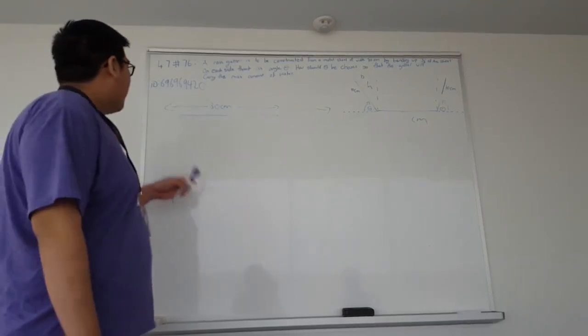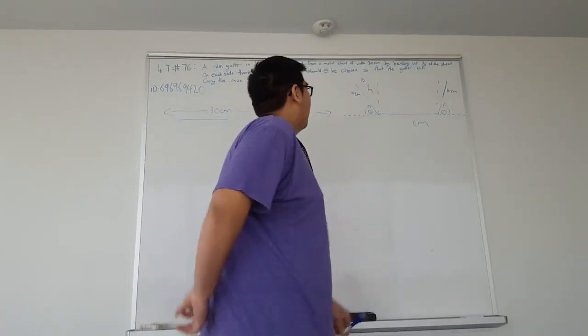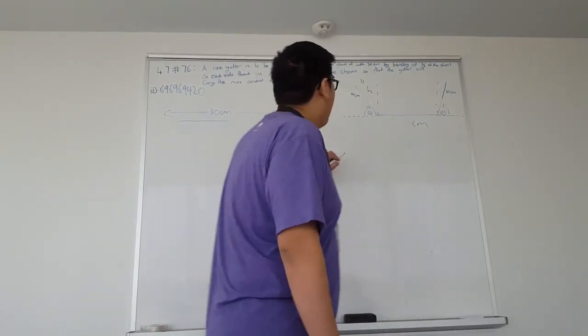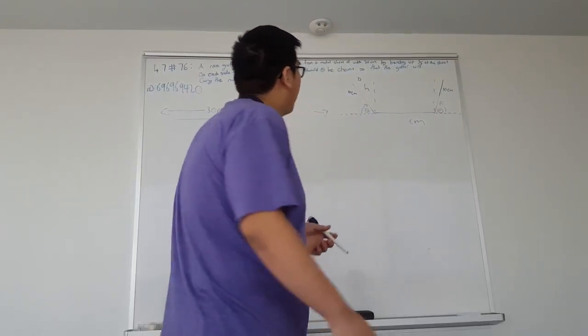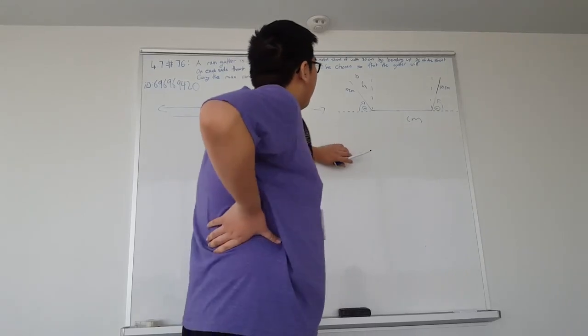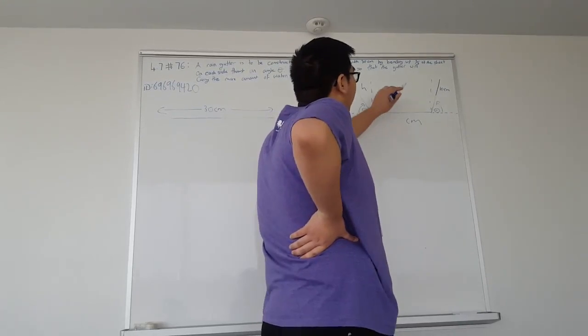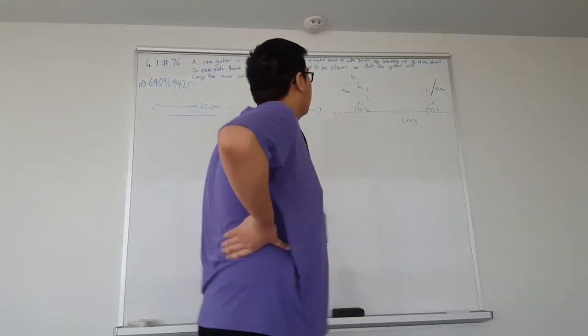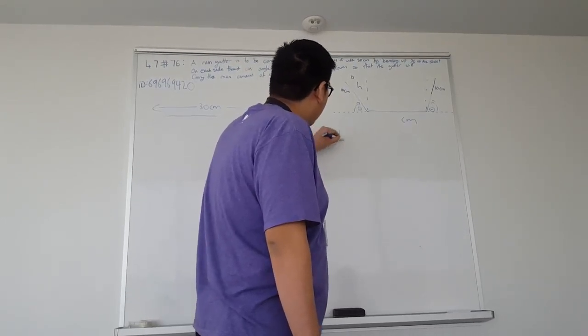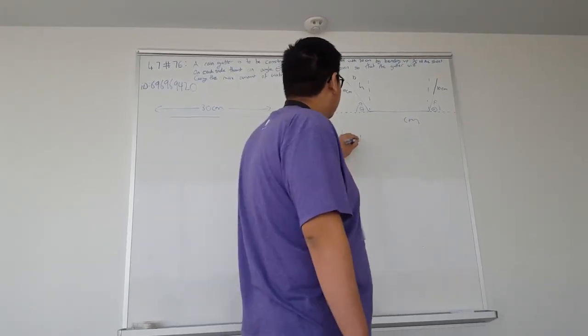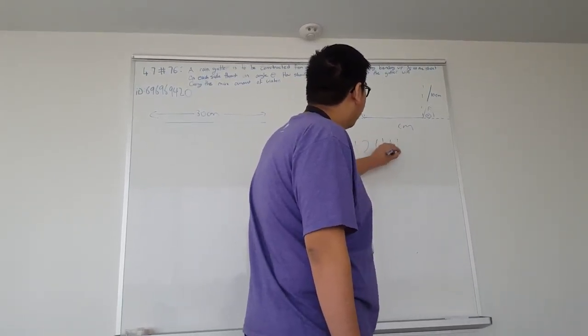Well, we're going to be bending this 30 centimeter long sheet into what seems like a bucket rain gutter. And we'll be trying to maximize the amount of water it can carry, which is the area. And what you can already see here is that it looks like a trapezoid, which consists of our square and two triangles. So our area would be base times the height of the square plus, since we have two triangles, one half the base times the height of each triangle.